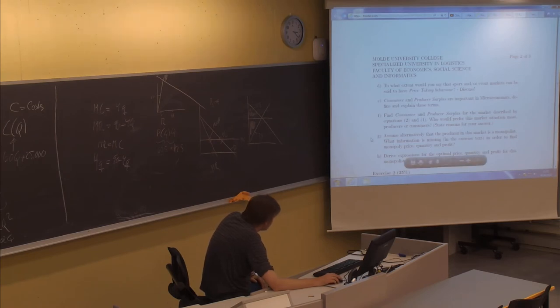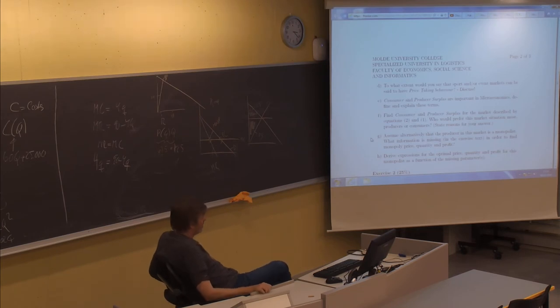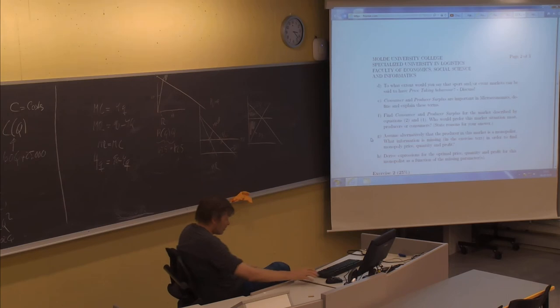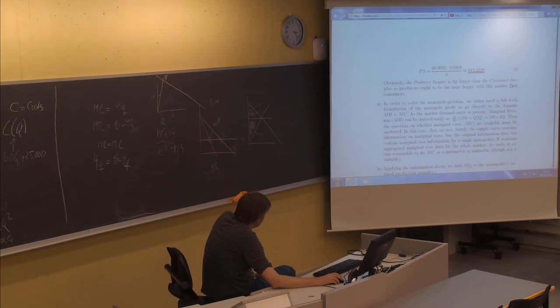So this was a perfectly competitive market. Now we move to sub-question G. Assume, alternatively, that the producer in this market is a monopolist. What information is missing in the exercise text in order to find monopoly price, quantity, and profit?